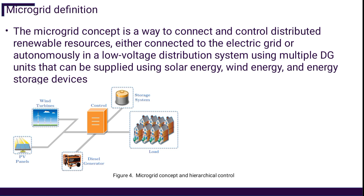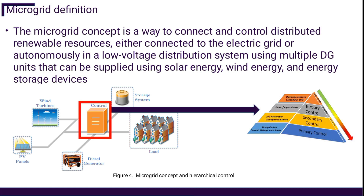One of the most used concepts to integrate renewable energies is the microgrid. A microgrid is a way to connect loads and distributed energy resources in a small area, and it has the capability of working in grid-connected mode or in island mode. The most used control is the hierarchical control, composed of many layers. The base of this pyramid is the primary control, which contains the current and voltage loops where we can find the PI and PR controllers.